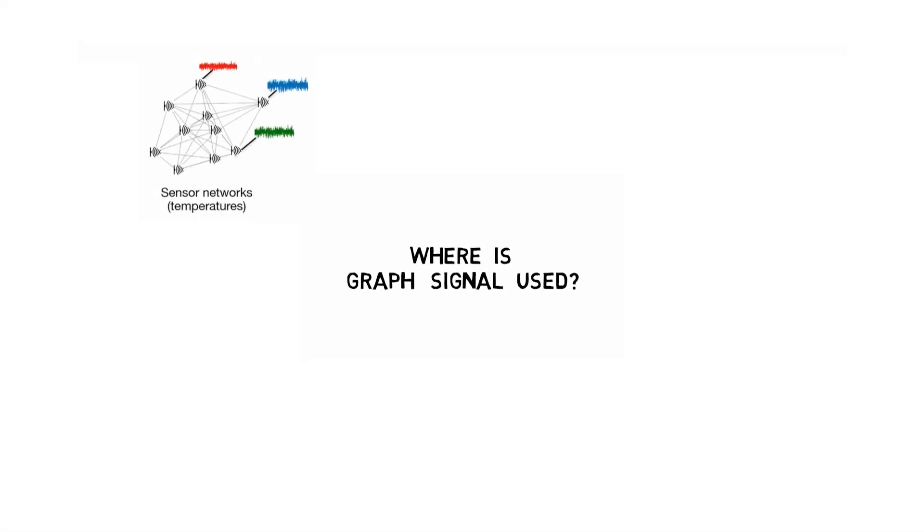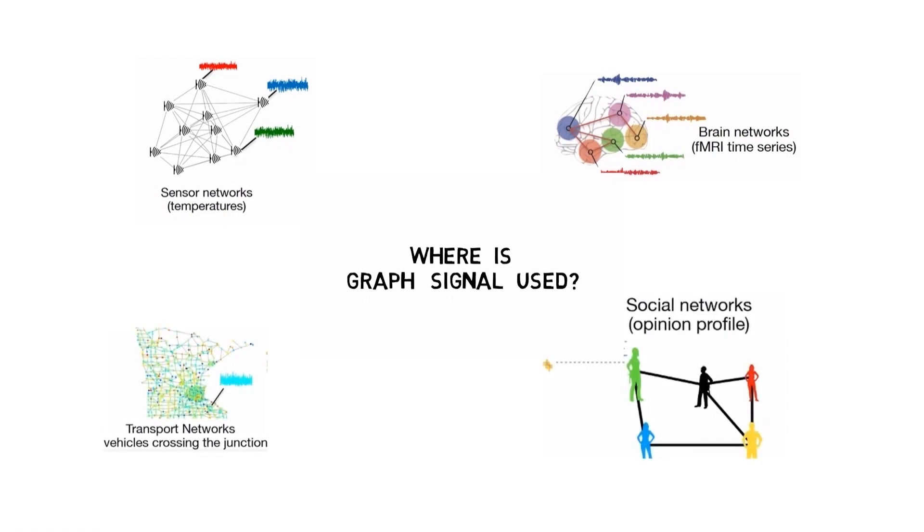Where can we see the usage of graph signals? Sensing networks, brain networks, transport networks, social networks. Now moving about the graph filtering process.